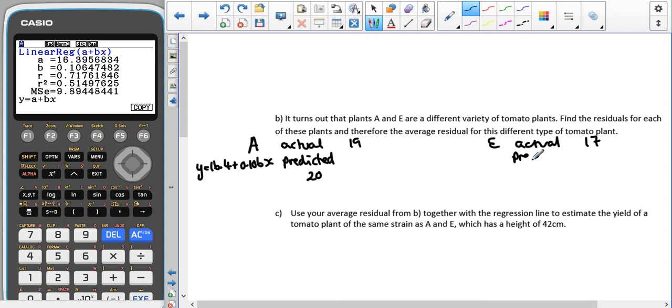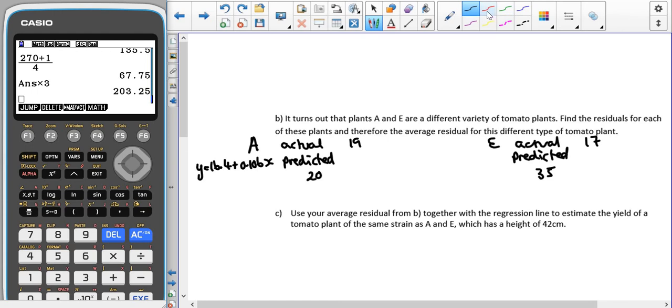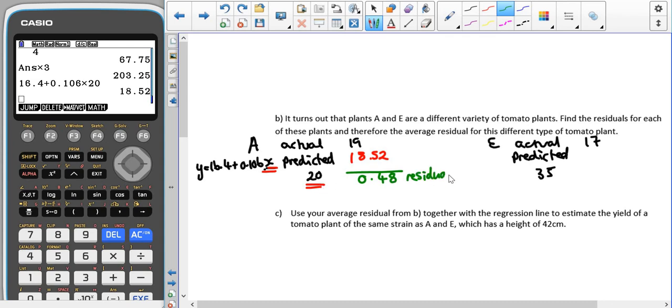For E, the predicted we're going to have to use 35. We can put this into our normal calculator mode. For A, we get 16.4 plus 0.106 times 20, which gives us 18.52. That means our residual, actual minus predicted, is 0.48. That is our residual for A.